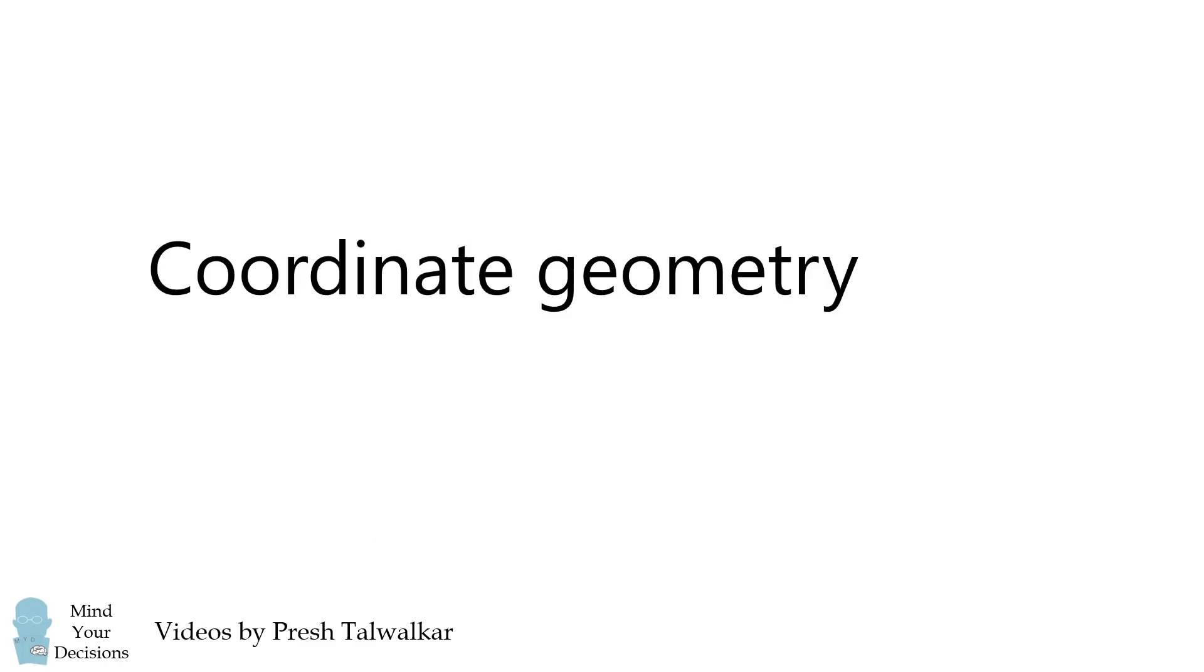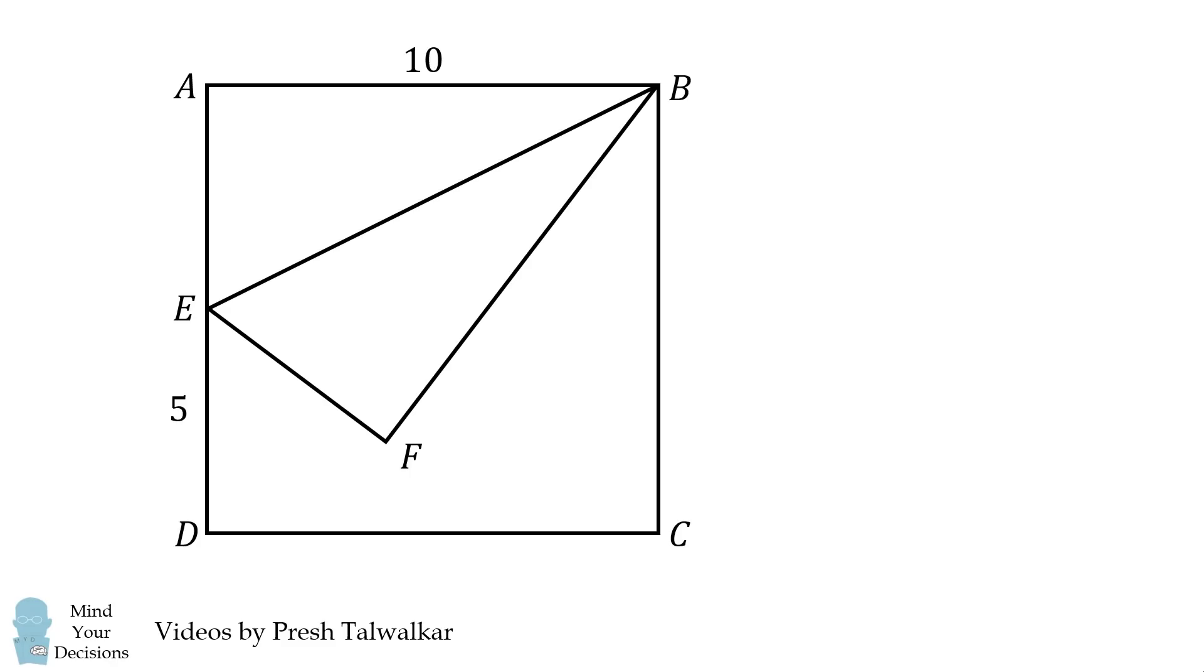Let's now move to the next method of using coordinate geometry. We will first set up a coordinate system. We'll run the x-axis through the bottom side of the square, and we'll run the y-axis through the left side of the square. We can then describe the coordinates of some of these points. The upper corner of the square will be equal to 10, 10, because each side of the square has a length equal to 10.